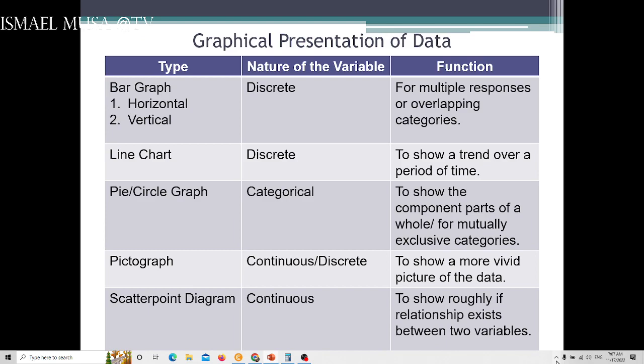These are the different types of graphs that we can utilize for our statistical presentation of data. As you notice, for each graph there are required nature of variable and what is the function. The first is the bar graph. A bar graph can be horizontal or vertical. It is effective if the nature of your variable is discrete. The function is for multiple responses or overlapping categories.